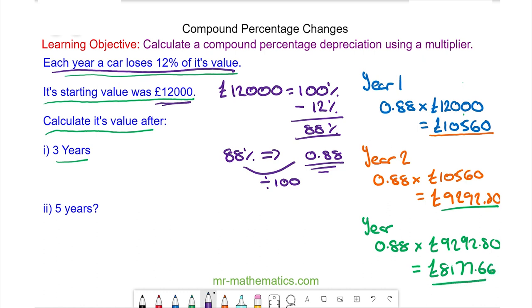There is a more efficient way of doing this question. If you can see we're multiplying by 0.88 by the number of years that we have. So we have our multiplier 0.88 raised to the power of a number of years which is 3.